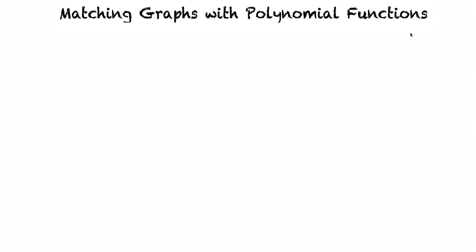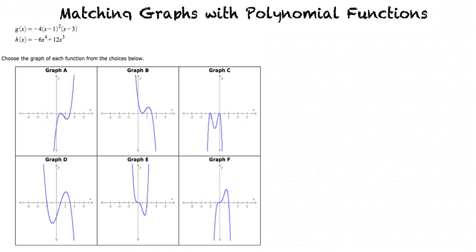In our example we will interpret two polynomial functions, and we will choose which graph is the correct one for each function from a list of several graphs. Here is our example. We have the functions g of x equals negative 4 times x minus 1 squared times x minus 3, and h of x equals negative 6x to the 4th plus 12x cubed, and I'll write them bigger over here. Our goal is to choose the graph of each function from these choices here.